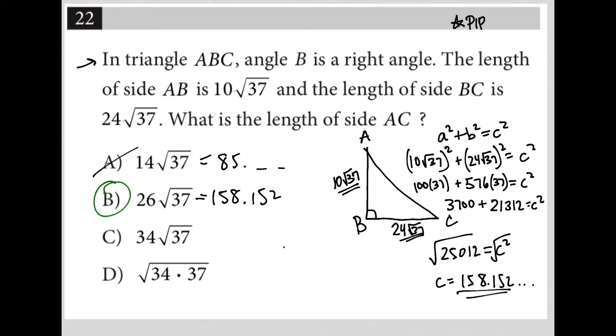Another way to look at this, though, is if I went back to having 25,012 equals C squared, I can look at my answer choices and say, well, they all have a root 37 involved, right? So if I wanted to simplify this when I square root it, I can say, well, what is 25,012 divided by 37?